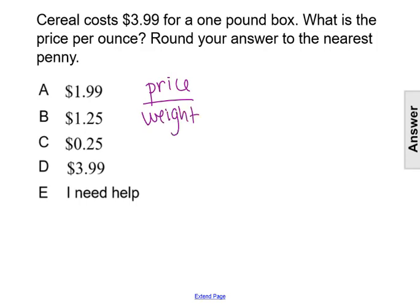We're given the information that it costs $3.99 for a one-pound box. But remember, we are going to use the price of $3.99, but we're given a one-pound box and we want to know the price per ounce. So there's 16 ounces in one pound.